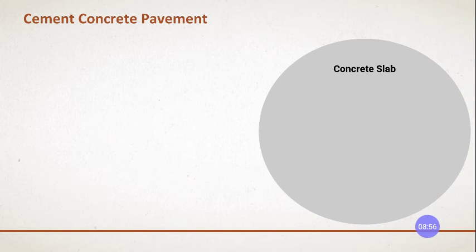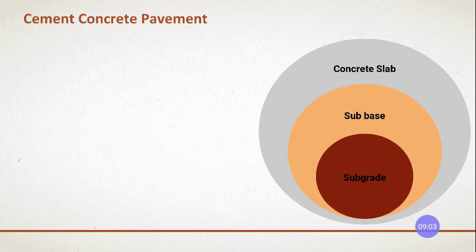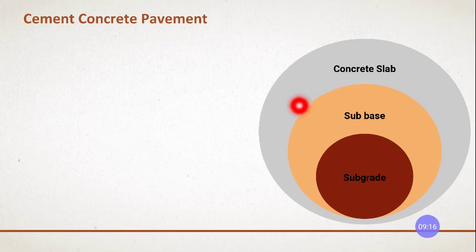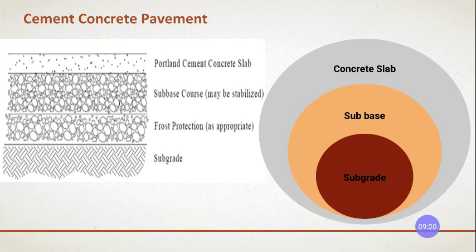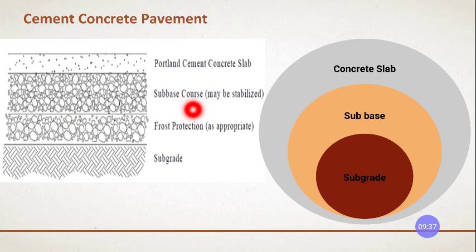The components of the concrete slab are: the first top layer is the concrete slab, then the subbase, then the subgrade at the lowest portion. You also have a drainage layer if required — if there is more water or capillary action. The subbase may be stabilized or not as required, and above that is the Portland cement concrete slab.